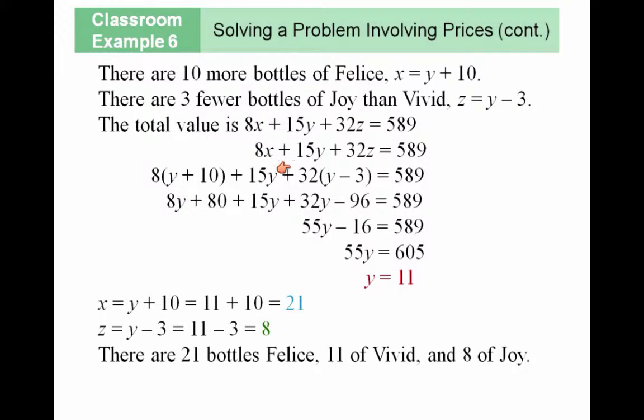In this case, for each X, I'm going to substitute Y plus ten. We know X in terms of Y. We also know Z in terms of Y, so we use a substitution method. For each Z, I'm going to substitute Y minus three.